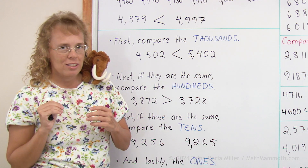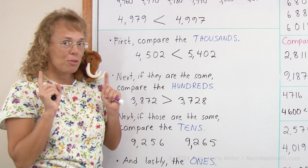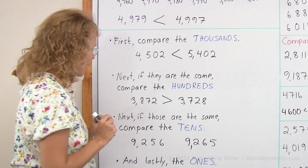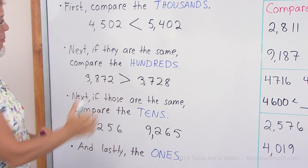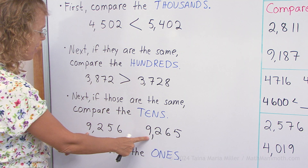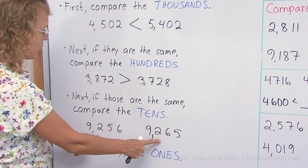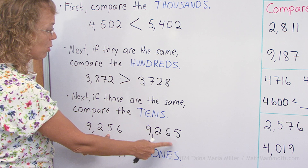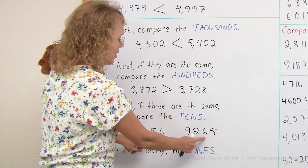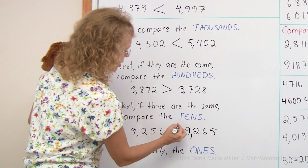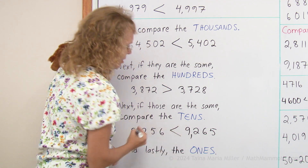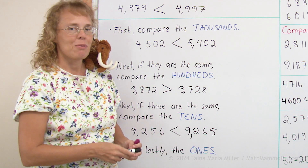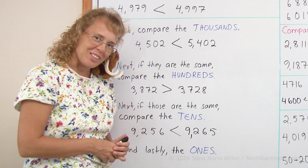And then if both thousands and hundreds digits are the same, then we compare the tens — like here: nine thousand, two hundred, then fifty or sixty. Sixty is more, so that number is then the greater number. And lastly, we would do the same with the ones.